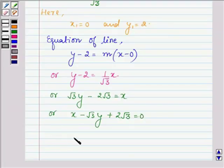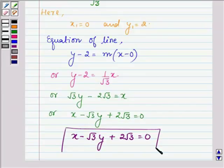Thus, the equation of the line satisfying the given condition is x - √3y + 2√3 = 0.